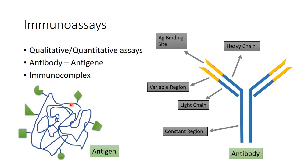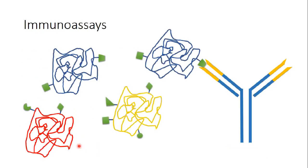An antibody has a specific binding site for a specific protein — what we call the key-lock mechanism. It's like a key and a lock: this key can bind only to this lock. This is why immunoassays are very specific and very sensitive — we can use them to detect a particular protein in a protein mixture or extract based on this key-lock mechanism.